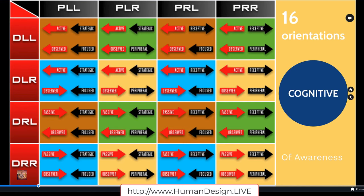Now that you know what your arrow is, I want you to look on this map and find where you are. The easiest way is to look at the top and say, okay, what's my P letters? Am I RR, RL, LR, or LL? Find your column, and then look over to the left for the design — it's in red, easy to see.